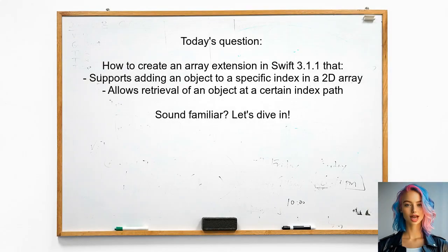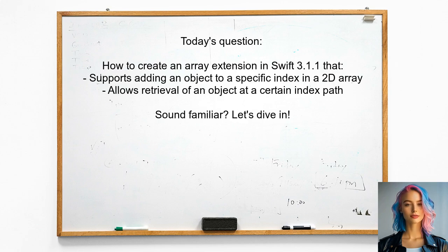Here's the specific question we're addressing today. One user asked how to create an array extension in Swift 3.1.1 that supports adding an object to a specific index in a 2D array, even if the array hasn't been populated yet. They also want to retrieve an object at a certain index path. Sound familiar? Let's dive into the solution.